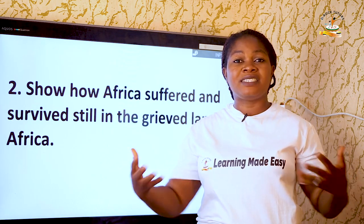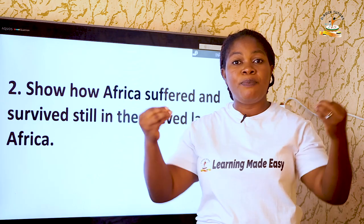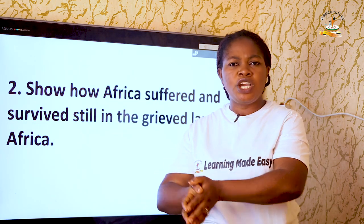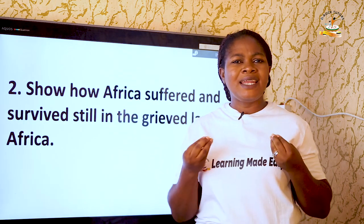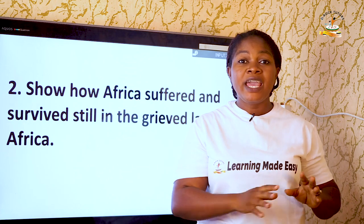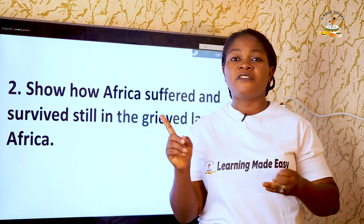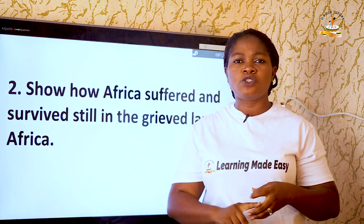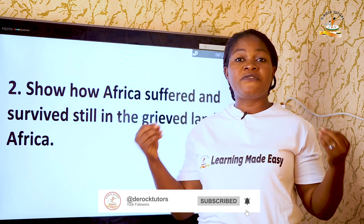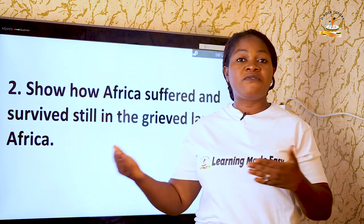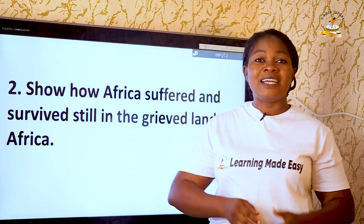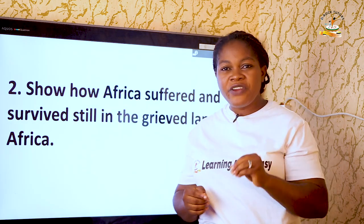They brought education and Christianity as a cover while doing corrupt things underneath. When young men stood up to fight for the rights of Africans and reclaim their nations from colonial masters, the colonial masters locked them in jails. The likes of Nelson Mandela, Léopold Sédar Senghor, and Agostinho Neto — who was also the first president of his nation — all fought for Africa's freedom and received several years of imprisonment in return.